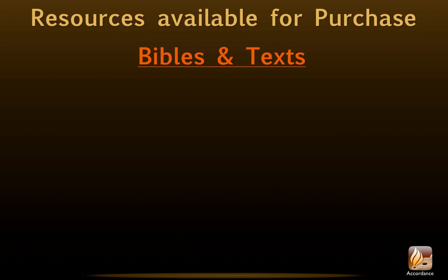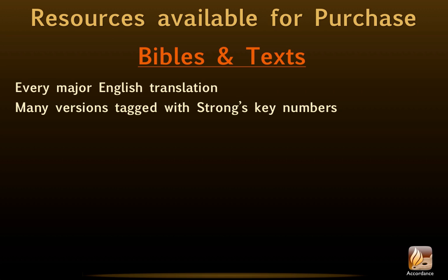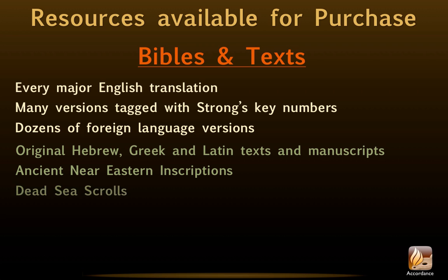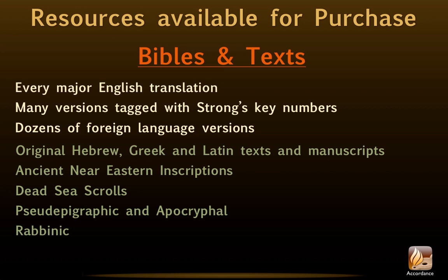If that's not enough, users can always purchase more. Currently, we offer more than 200 different Bibles and texts. These include every major English translation, many versions tagged with Strong's key numbers, and dozens of foreign language versions. For scholars, we also have what you need, whatever your subfield of Biblical studies: original Hebrew, Greek, and Latin texts and manuscripts, ancient Near Eastern inscriptions, Dead Sea Scrolls, pseudepigraphic and apocryphal works, rabbinic, and patristic material.